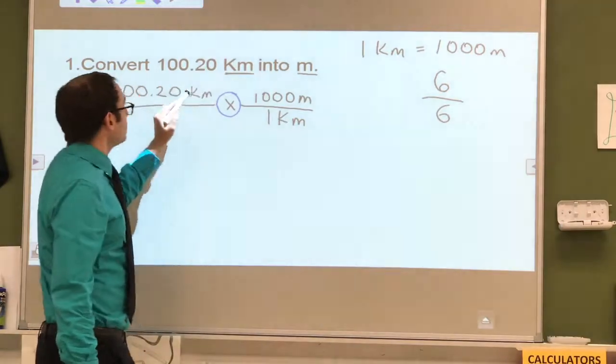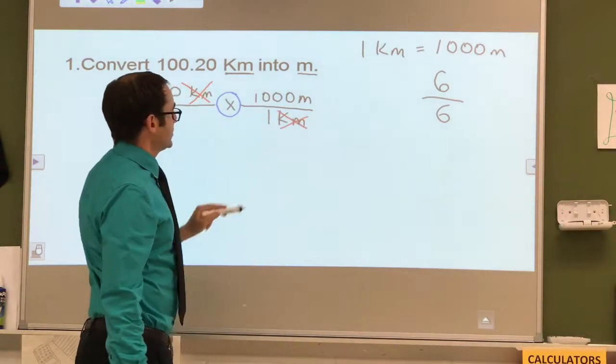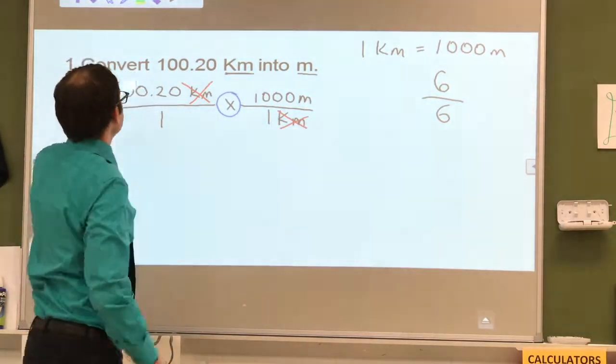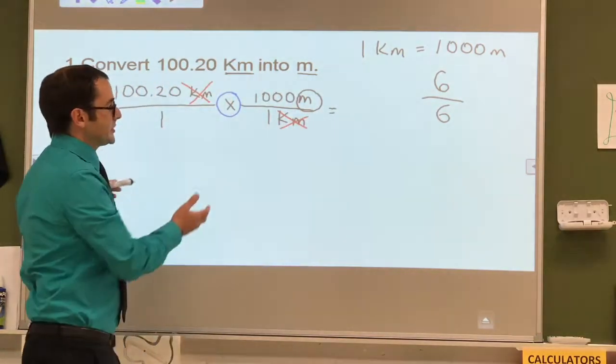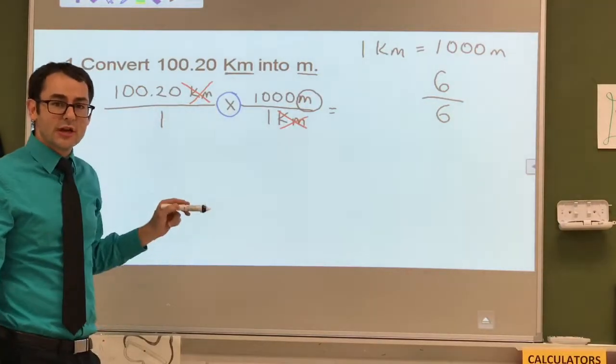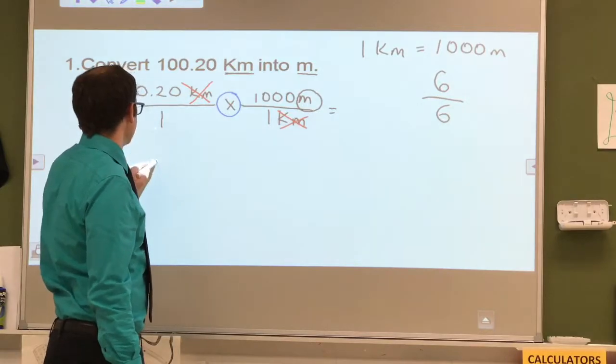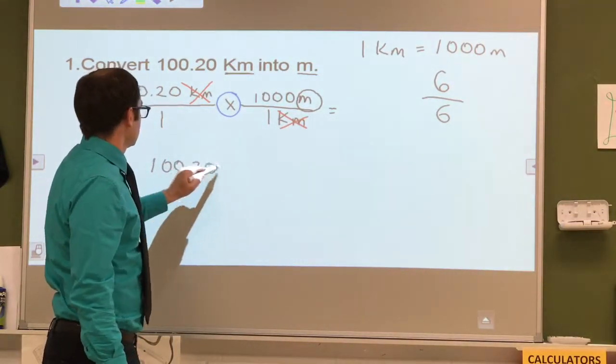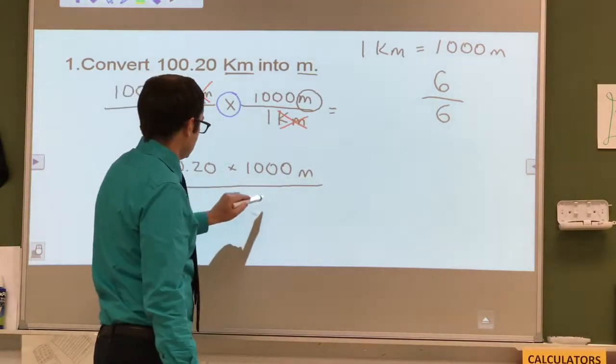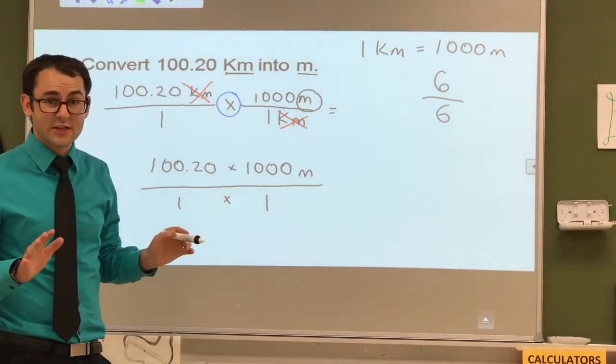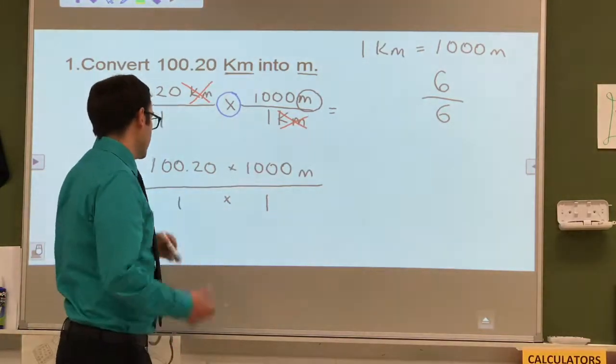But we need to make this equal on the top and the bottom. So we put 1 kilometer and we know that 1 kilometer equals 1,000 meters. So that's what goes on the top and now we cross it out. So now the only unit that's left right now is meters. So we can actually solve this problem now. Because there's a multiplication sign, what you're actually doing here is you're multiplying across the top. Since these are just ones you can just ignore them and then multiply across and you'll get your answer.